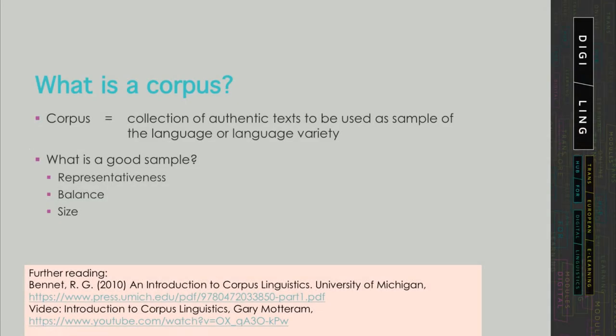Let's start with some basic notions in corpus linguistics. A corpus is a collection of authentic texts to be used as a sample of the language or language variety. Sample is actually a term from statistics, and there's also a verb called sampling. Normally we use samples to draw conclusions about the entire population. What is a good sample?